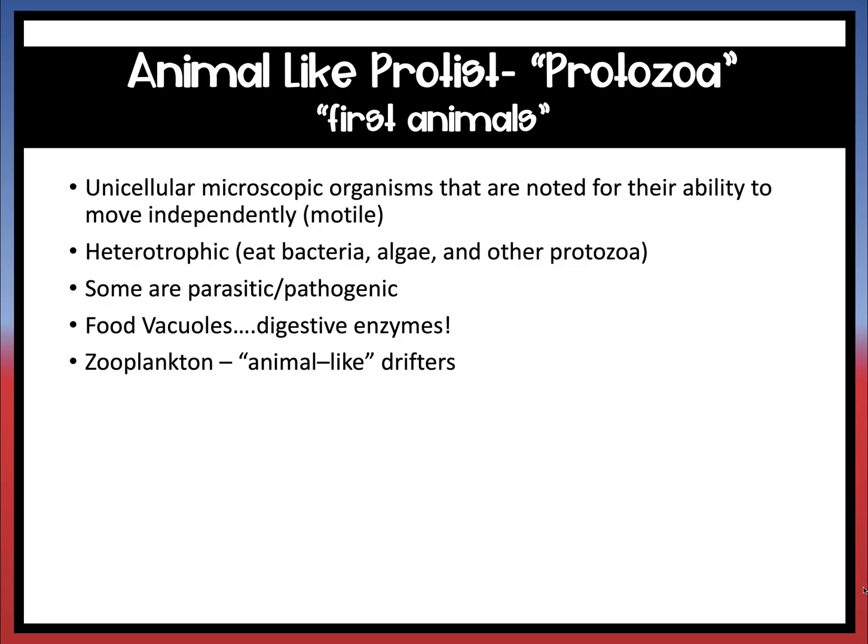Now we will begin by talking about animal-like protists, or protozoa. Protozoa literally means 'first animals.' These are unicellular or microscopic organisms noted for their ability to move independently. They are heterotrophic, meaning they get their nutrition by eating other organisms like bacteria and algae. Some are parasitic, living off other organisms. A common one you may have heard of is zooplankton, or animal-like drifters.